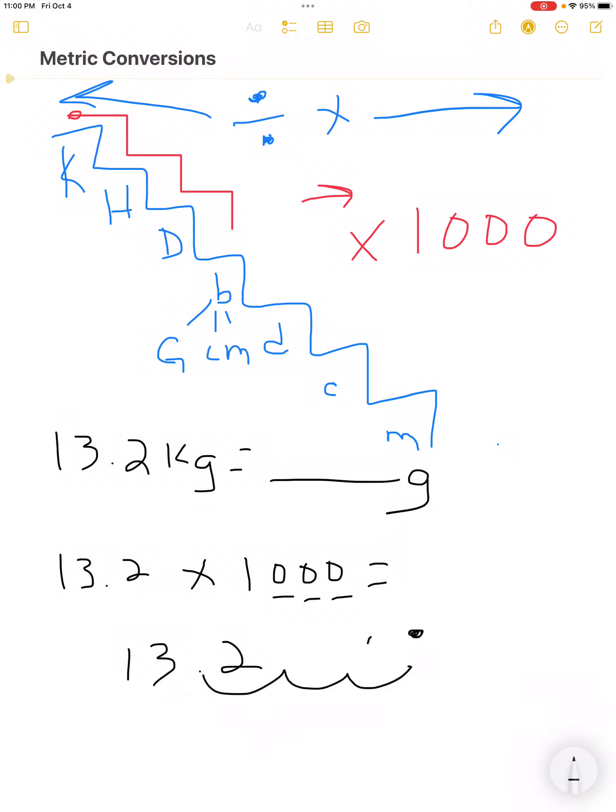Replace the decimal and fill in your empty spaces with a zero. So, our answer here is one, three, two, zero, zero. With a decimal at the end, but since there's no more numbers, you don't have to add the decimal. The only thing we're missing is a comma. So, 13.2 kilograms equals 13,200 grams. Easy stuff.